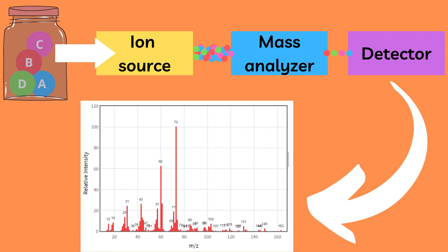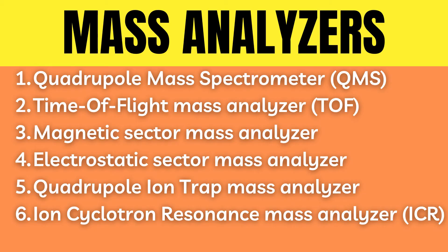Once the sample has been ionized it gets passed along to the mass analyzer. Here again there exist multiple different mass analyzers to choose between: quadrupole mass analyzer, time-of-flight mass analyzer, magnetic sector mass analyzer, electrostatic sector mass analyzer, quadrupole ion trap mass analyzer, and finally ion cyclotron resonance.